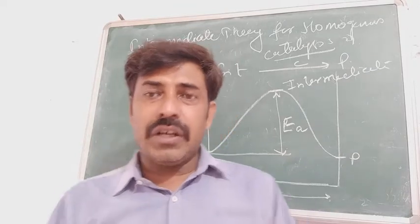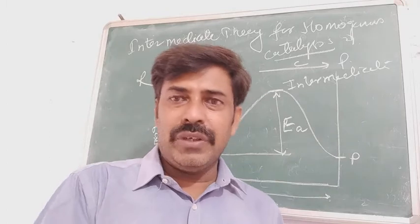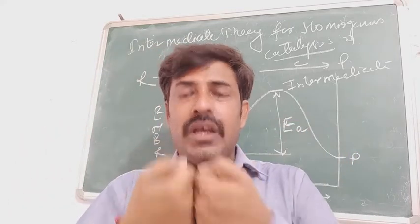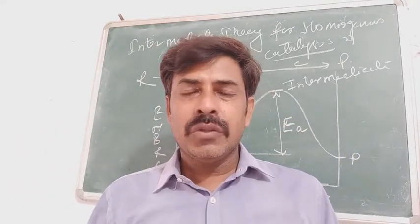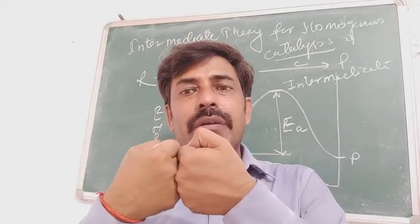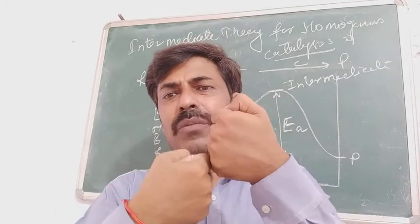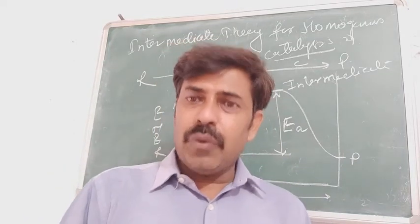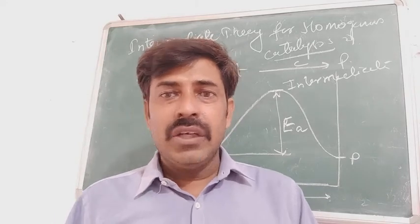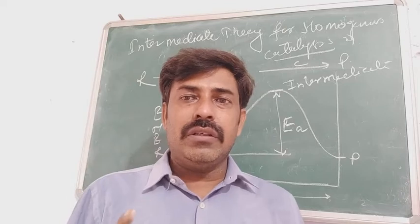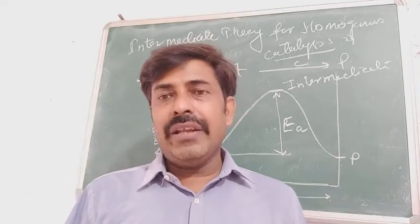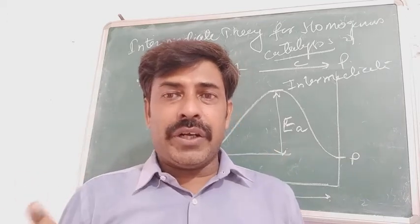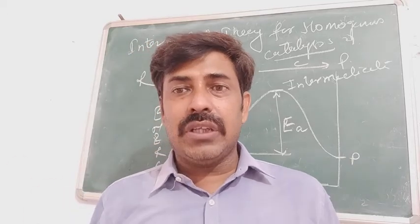Sometimes the collisions are perfectly oriented, but sometimes they are not. The collisions which are capable of providing energy equal to or greater than the energy of activation are called effective collisions. The collisions which are not able to provide this much energy are called ineffective collisions. It is only the effective collisions which are capable of proceeding the reaction.